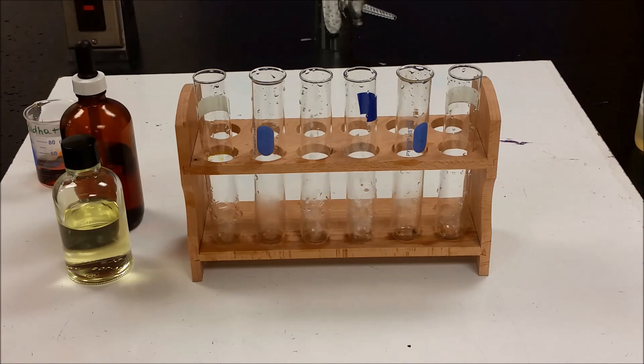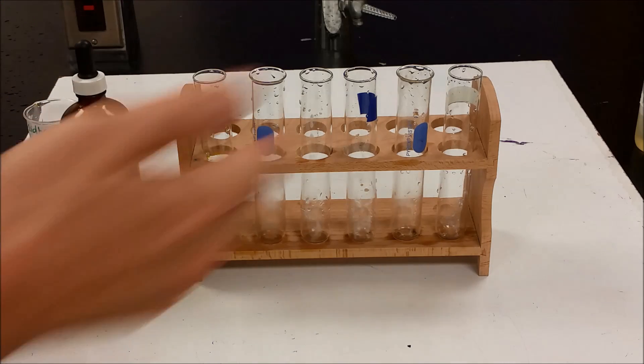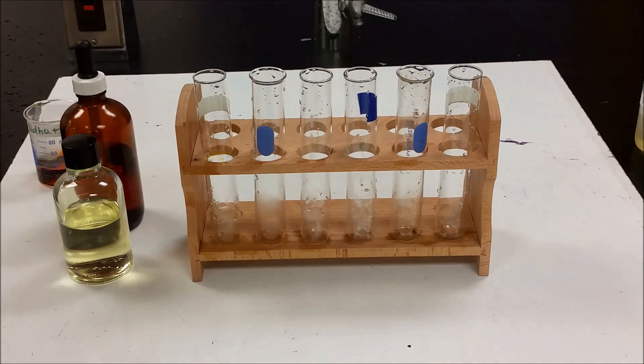We're going to do a little demonstration of the halogen reactivity series. We have some chlorine, some bromine, and some iodine dissolved in water. And then we have sodium chloride, sodium bromide, and sodium iodide. So we're going to take each halogen and react it with the complementary halides.